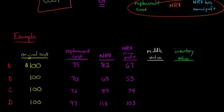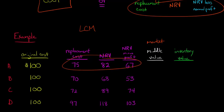So what we need to do for lower of cost or market — LCM — is compare the cost against the market value, and the market value is going to be the middle value of these three. So let's look at situation A: we've got a replacement cost of 75, an NRV of 82, and an NRV minus profit of 67. The middle number of those three is 75, so we put 75 there — that's our market value.